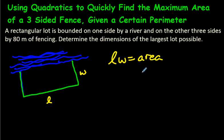And in this case, let's read the question. So we're given a certain perimeter, and we have a three-sided fence, and a rectangular lot is bounded on one side by a river. There it is. And on the other three sides, by 80 meters of fencing. So the total amount of fencing is 80. And if we were to write the perimeter of this thing, of this fencing, I think you would agree with me.